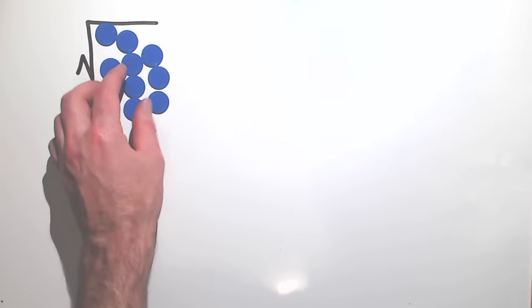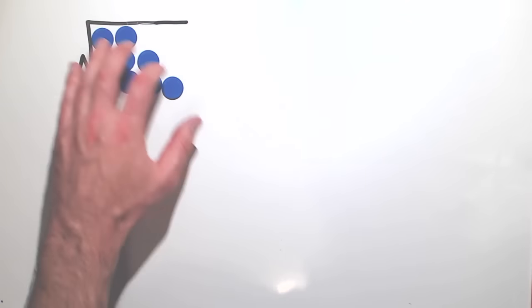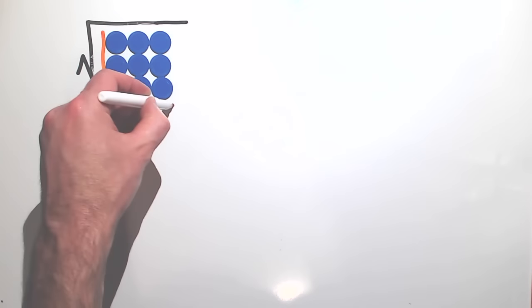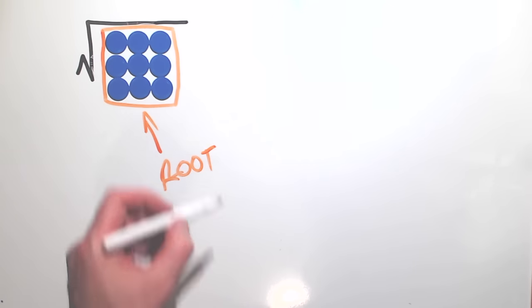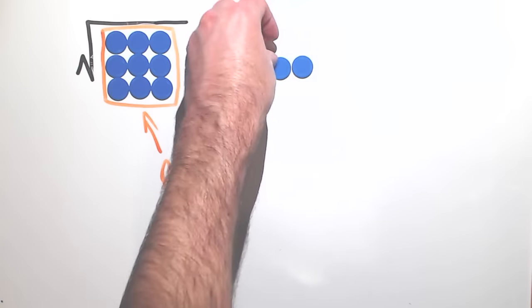Let's bring our counters back to explore the square root function. If we want the square root of nine, we can replace the digit nine with nine counters. We then form this into a square and count the number of counters along one side. This is the root of the square or the square root. Therefore, the square root of nine is equal to three.